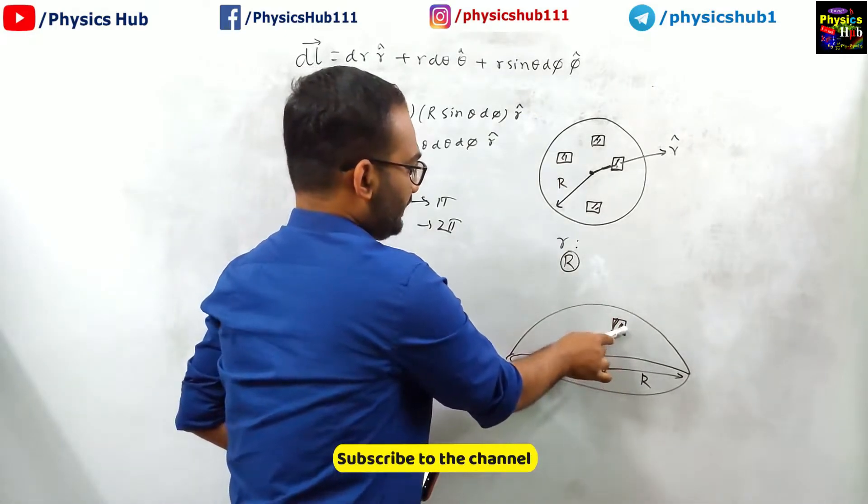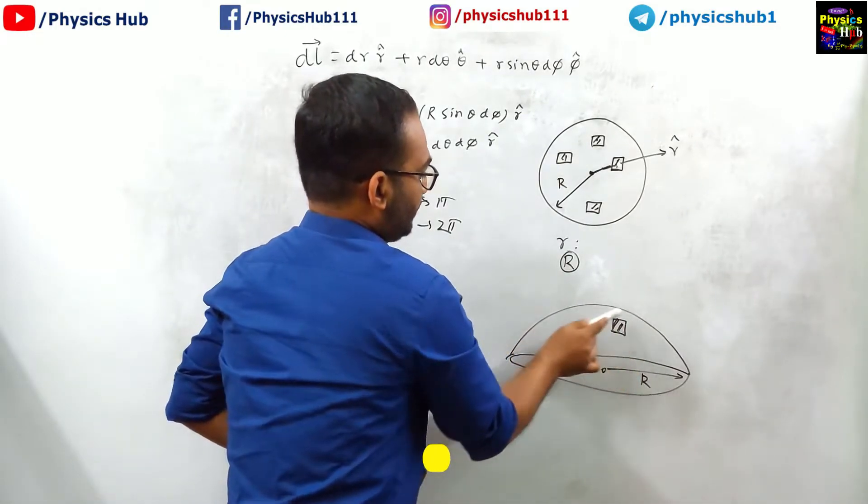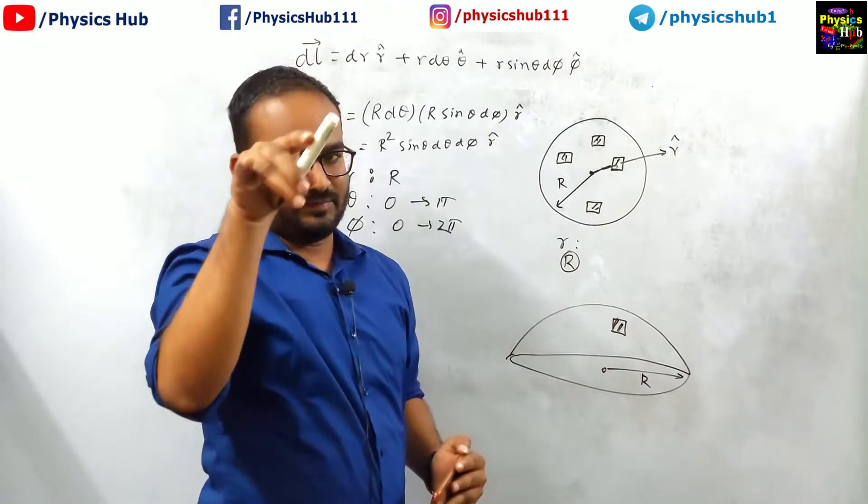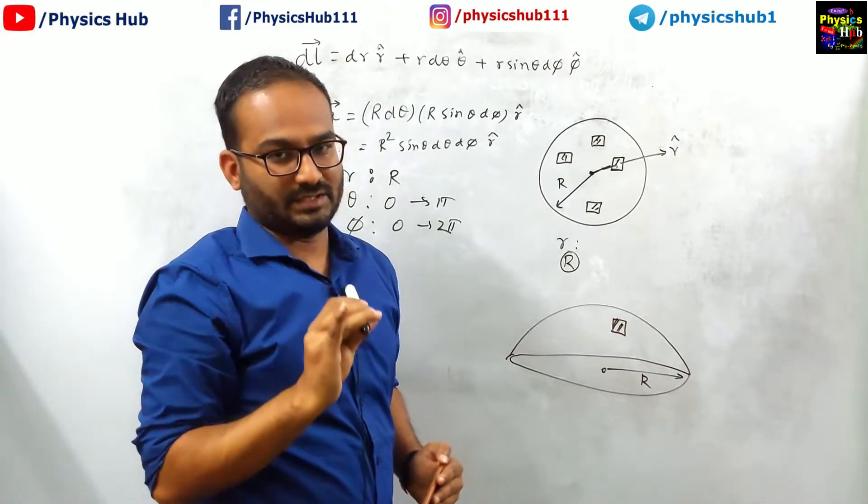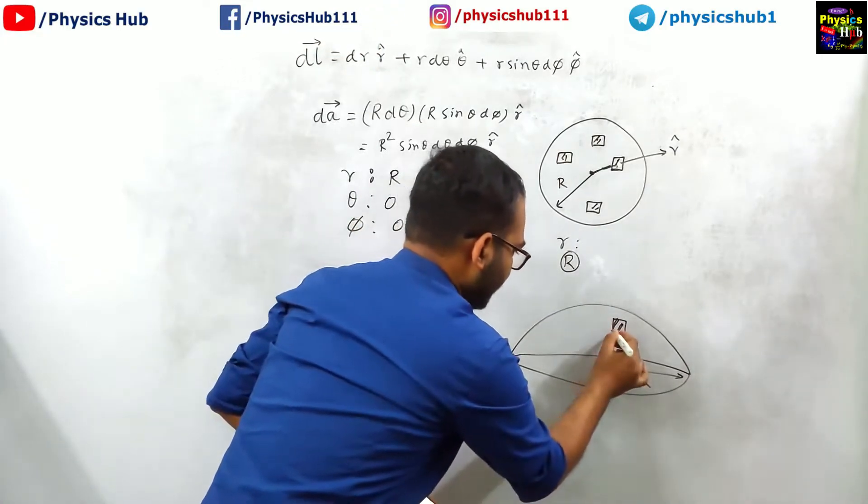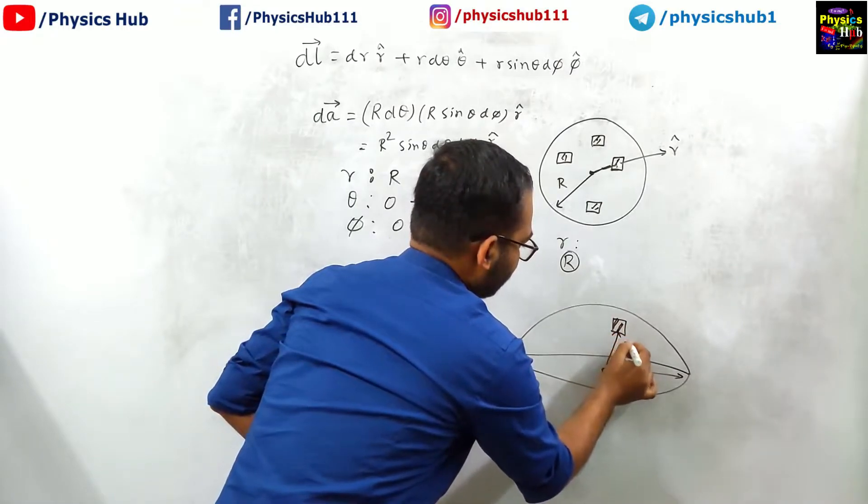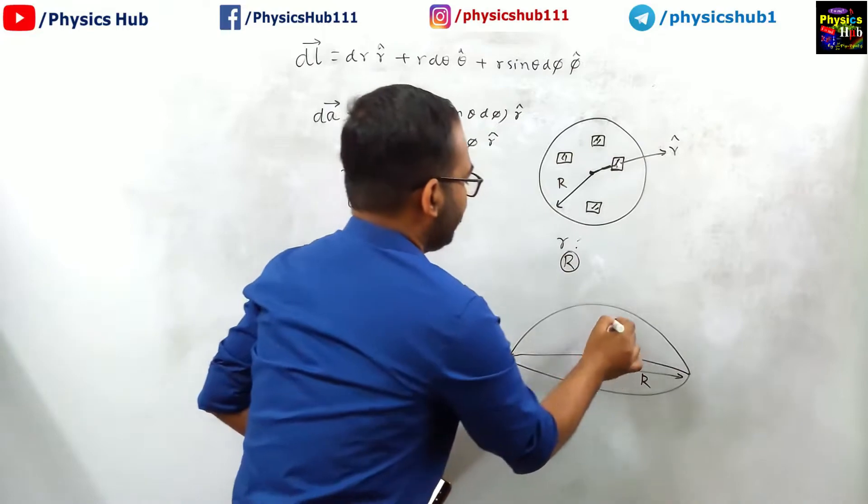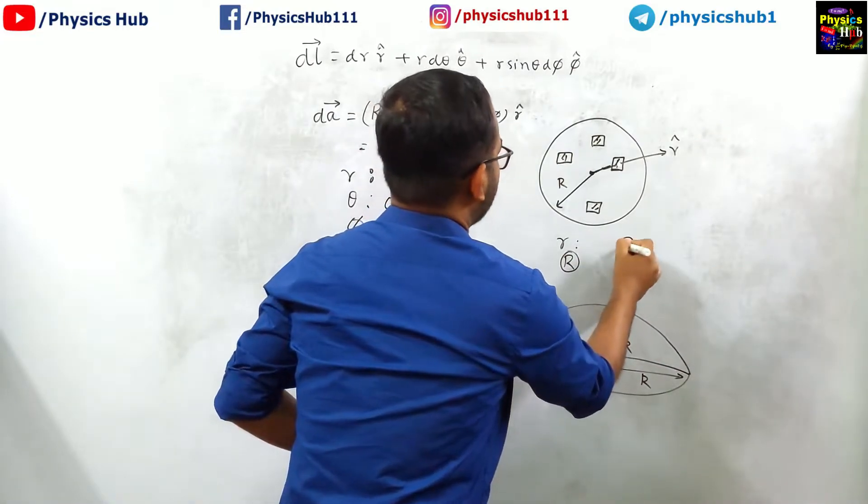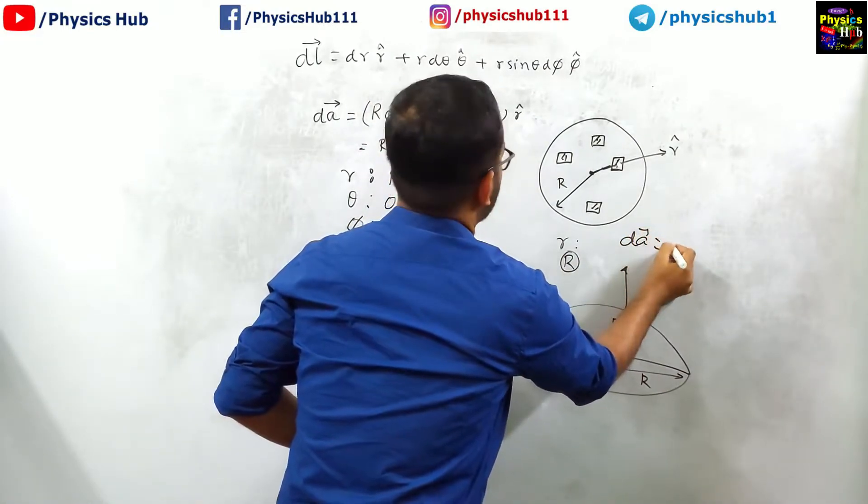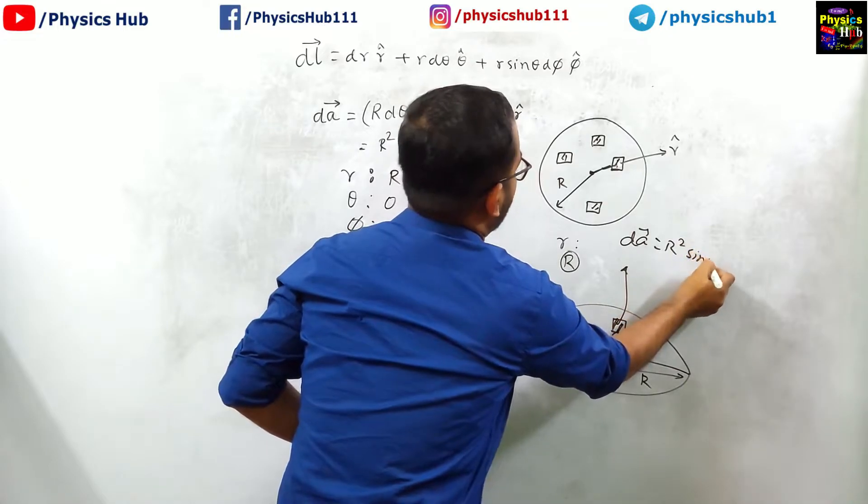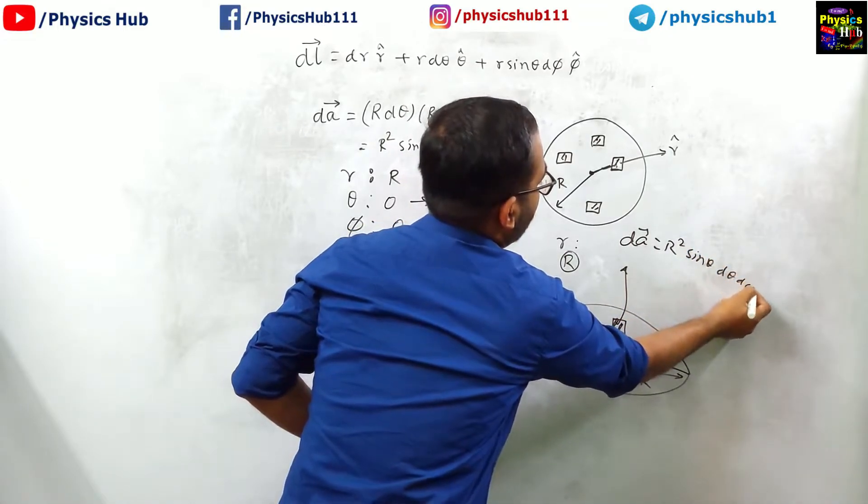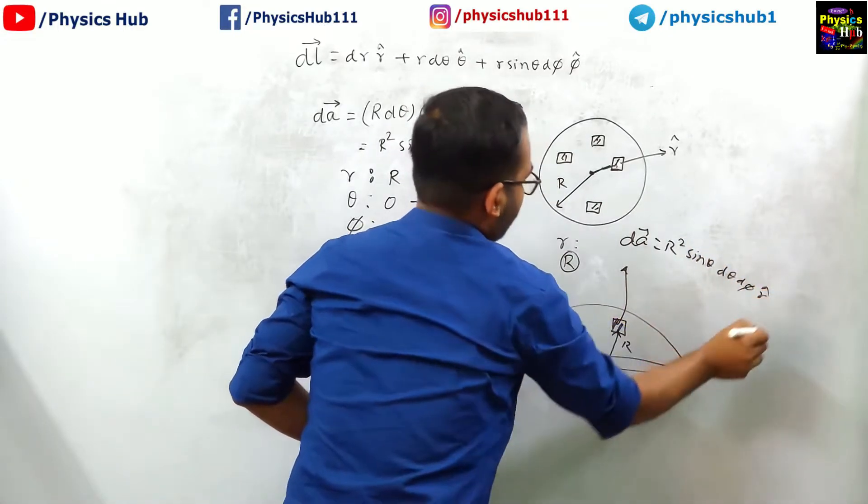Whether you consider the surface here, here, here, here, here, anywhere on the curved face, what is constant? Again r is constant, radius is constant. So again the area element here will be dA equals r square sin theta d theta d phi r cap.